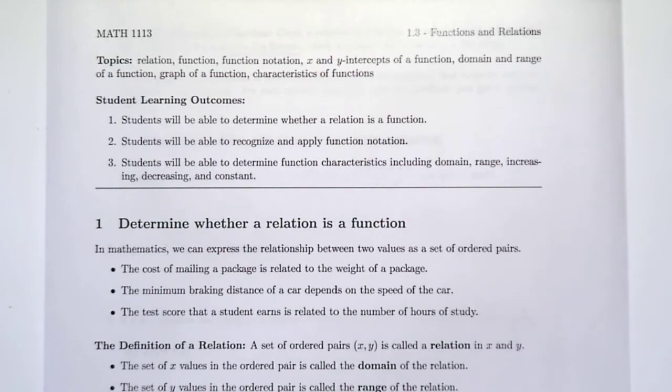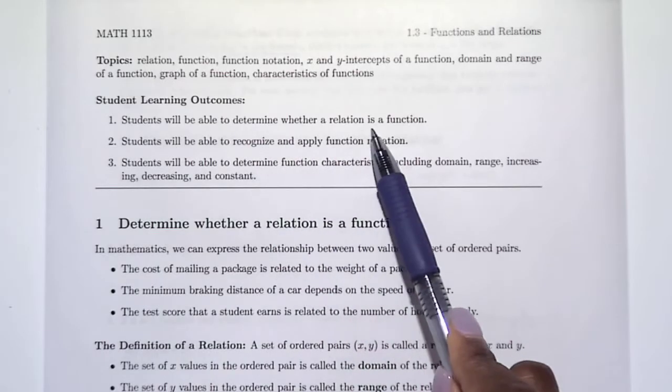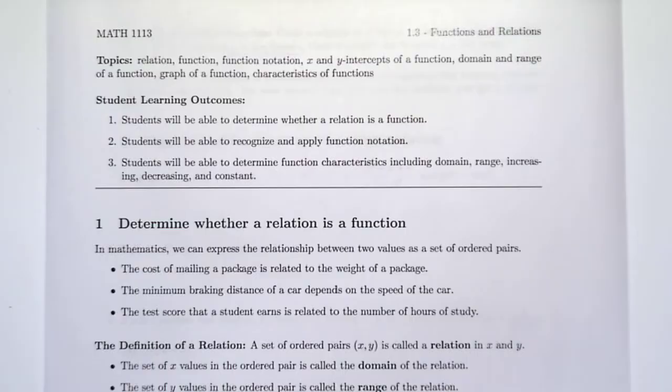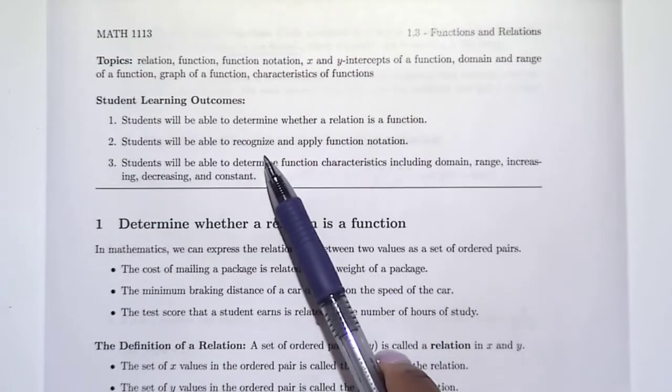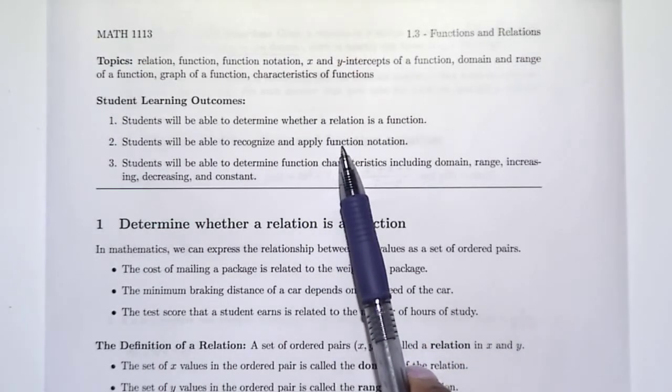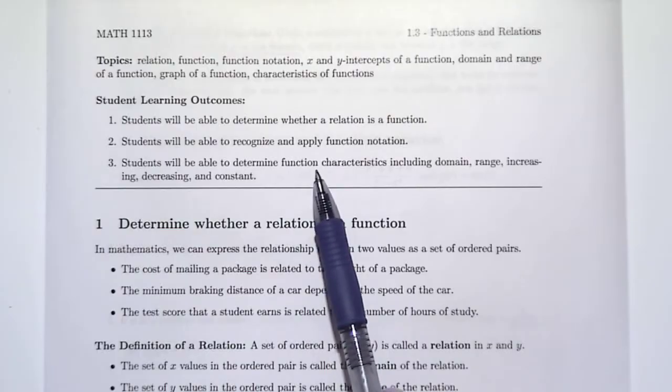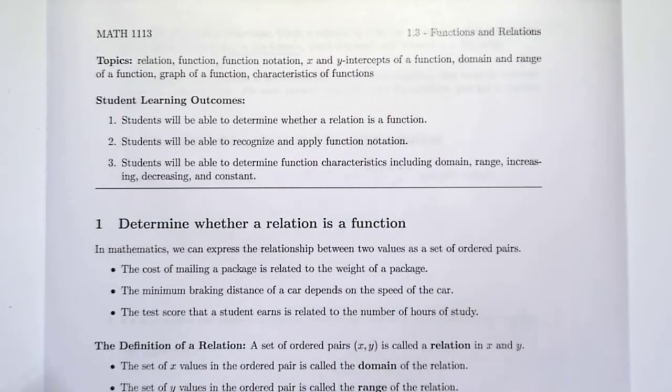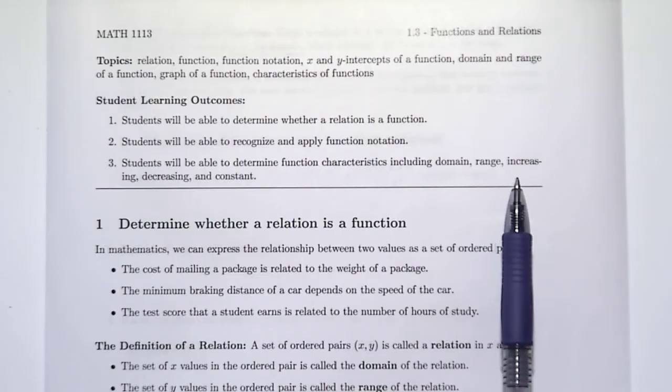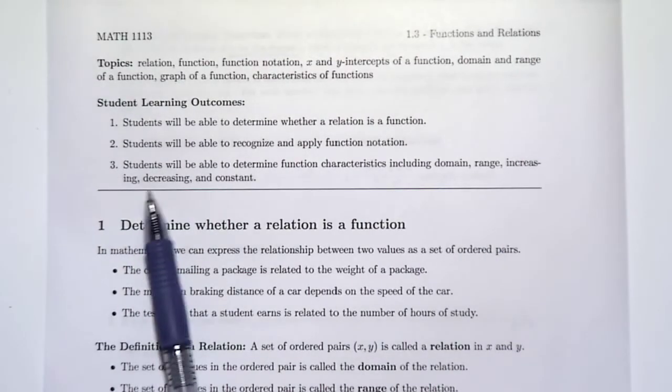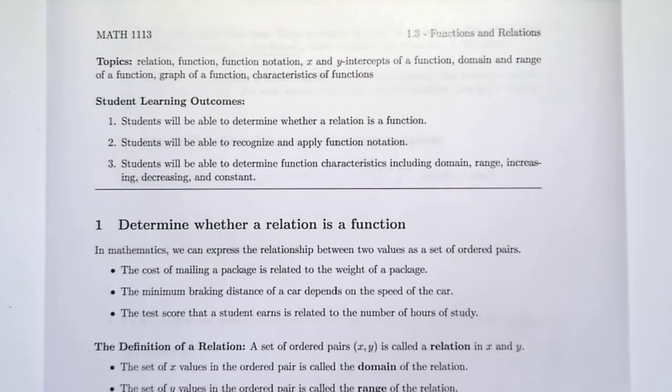Today we're talking about section 1.3, functions and relations. The student learning outcomes are: you will be able to determine whether a relation is a function, you will be able to recognize and apply function notation, and you'll be able to determine characteristics of a function including the domain, range, whether it's increasing or decreasing, or if a function is constant.